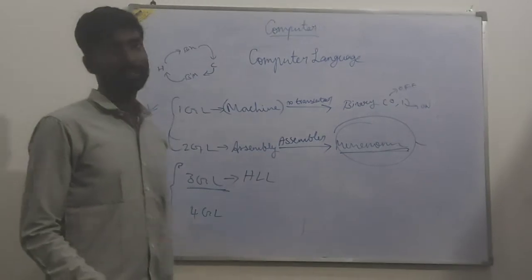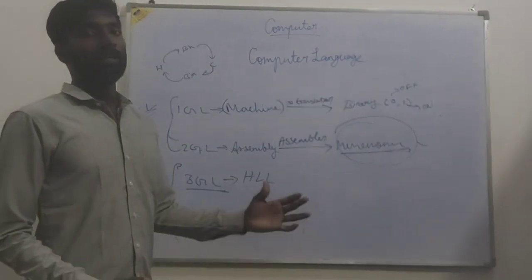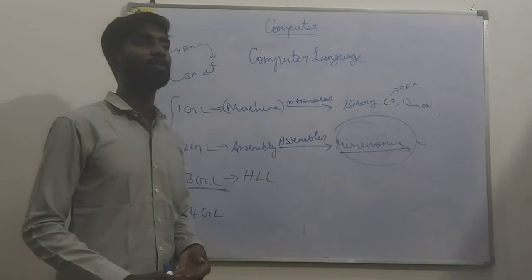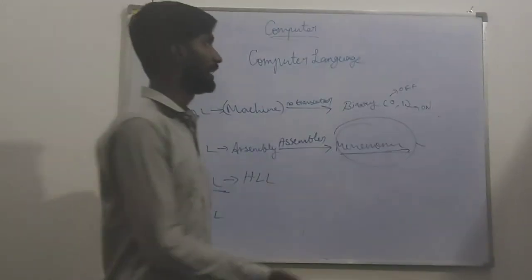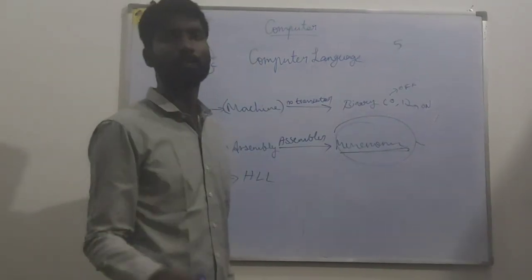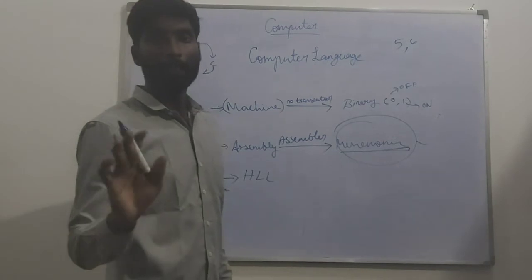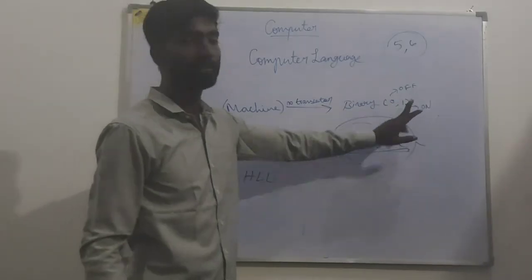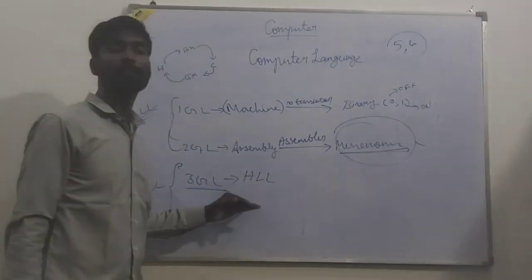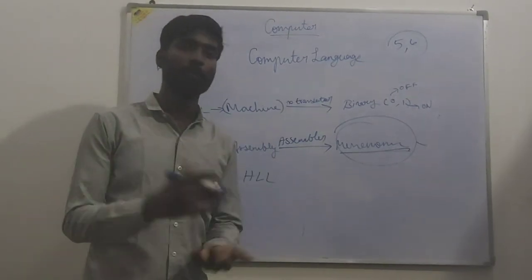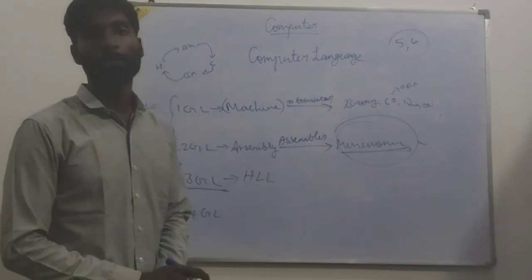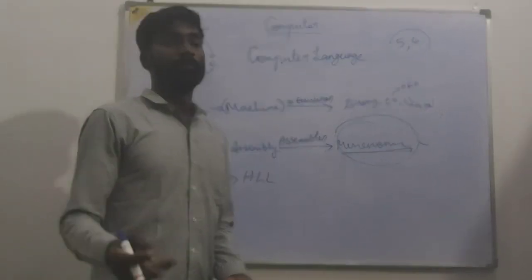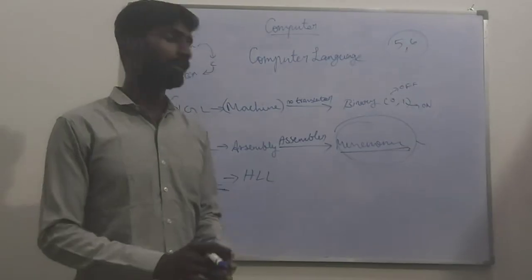In third generation, high level language, it is easier. Examples are C, C++, Java, Python, Ruby, Pascal, Cobol — these languages belong to high level. In binary, there is no number like 5 or 6, only 0 and 1. Same in assembly. But in high level language, it is easier and understandable for us.